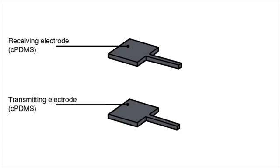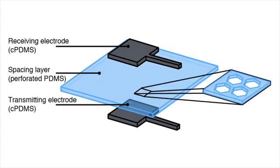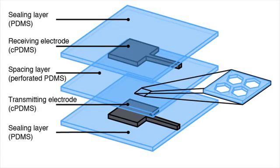We present a soft-matter electrode design that supports both projected capacitance and resistive touch sensing. It contains two embedded electrodes. These are held apart by a perforated spacing layer. The structure is sealed by two additional non-conductive layers on the top and bottom.